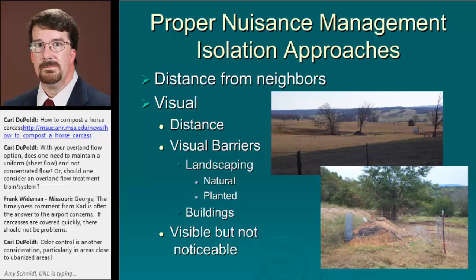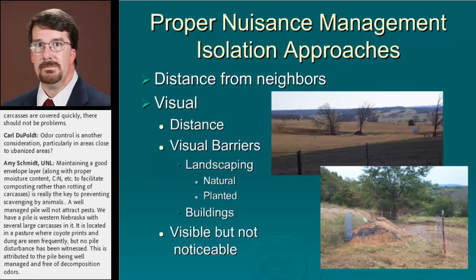The other approach — nuisance management through isolation — is really about how far away it is from those who would find it objectionable. The first step is visual: the farther away it is, the less you'll be able to see it. In the upper picture, you can see at the base of a center tree there's a compost pile containing several beef cow heifers. In this situation, it doesn't look offensive, but it would be noticeable if you saw a tractor loading the pile. You also need to think about landscaping, terrain, and how visible the facility is. Sometimes you can't make something invisible, so you want to think about whether it can be seen in such a way that it's not really that noticeable.